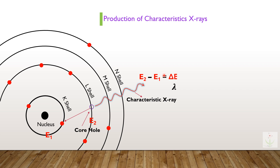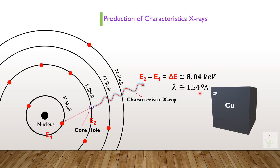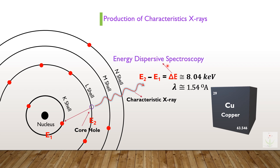That's why characteristics X-rays are used to identify the particular element from which they are emitted. For example, an emitted X-ray with energy of 8.04 kilo-electron volts and a wavelength of 1.54 angstroms belongs to the K-alpha radiation of copper. Both the energy and wavelength of emitted X-rays are used to identify the elements present in materials to find out their chemical composition. If X-rays are sorted based on their energy, it is known as energy dispersive spectroscopy; if sorted by wavelength, it is termed wavelength dispersive spectroscopy.